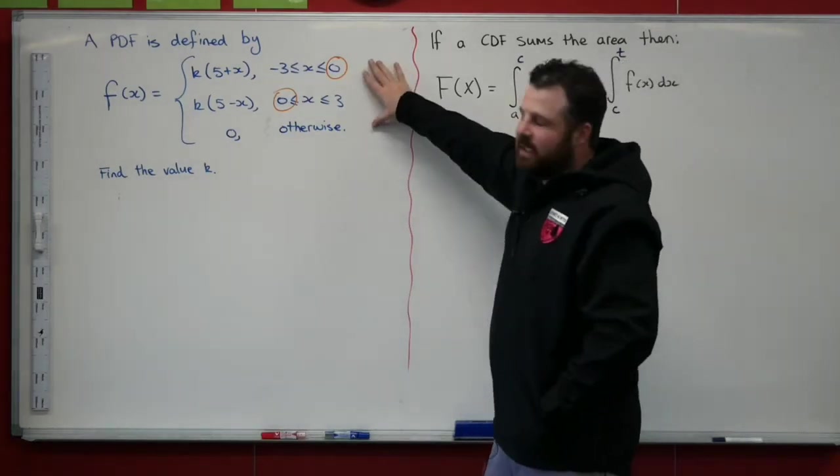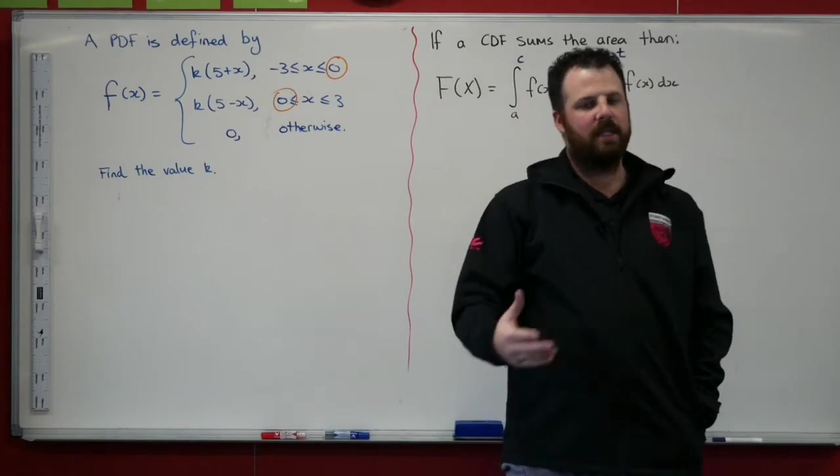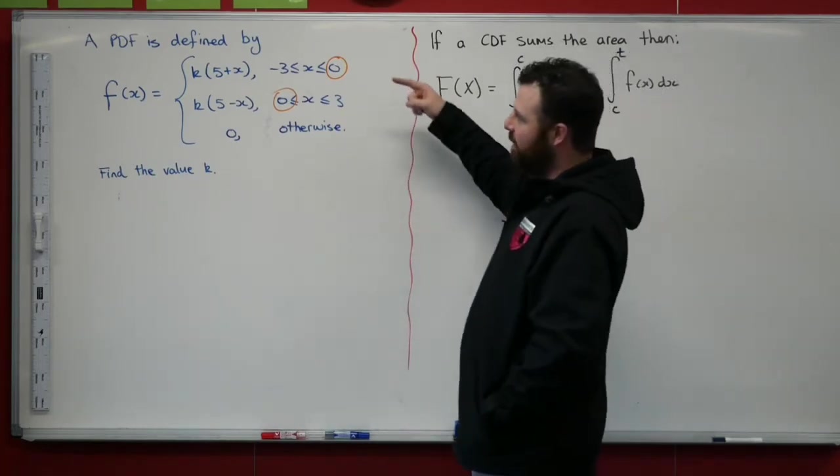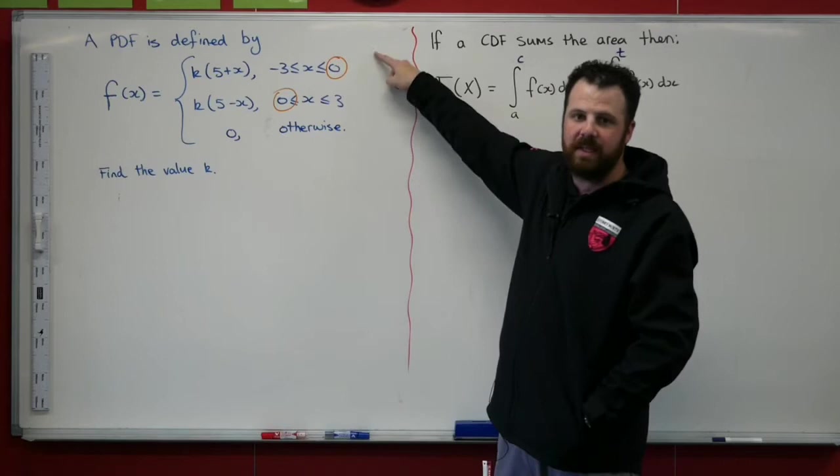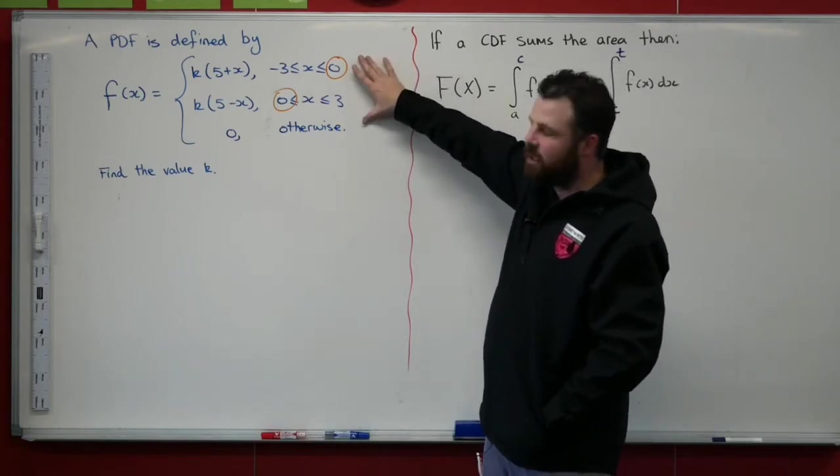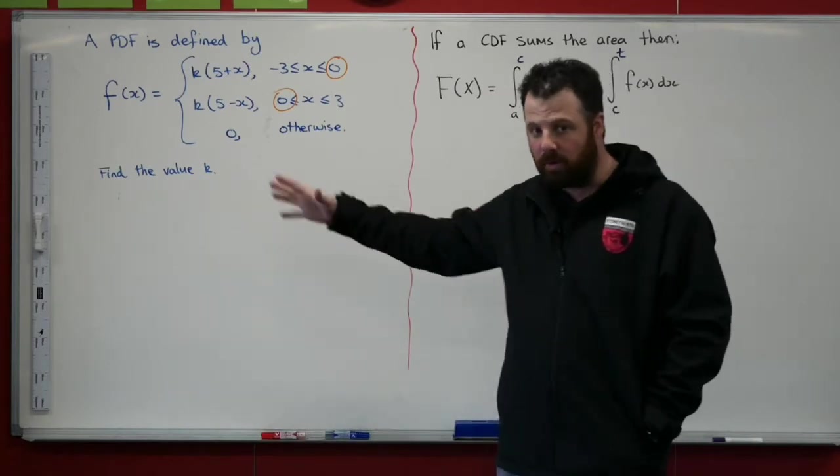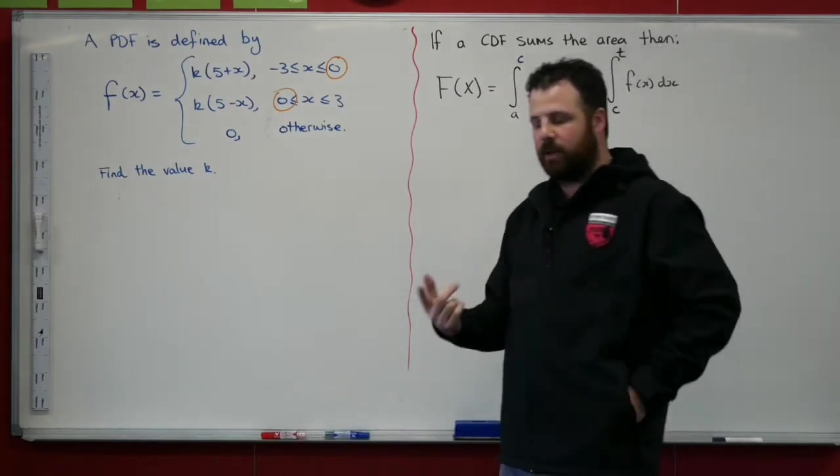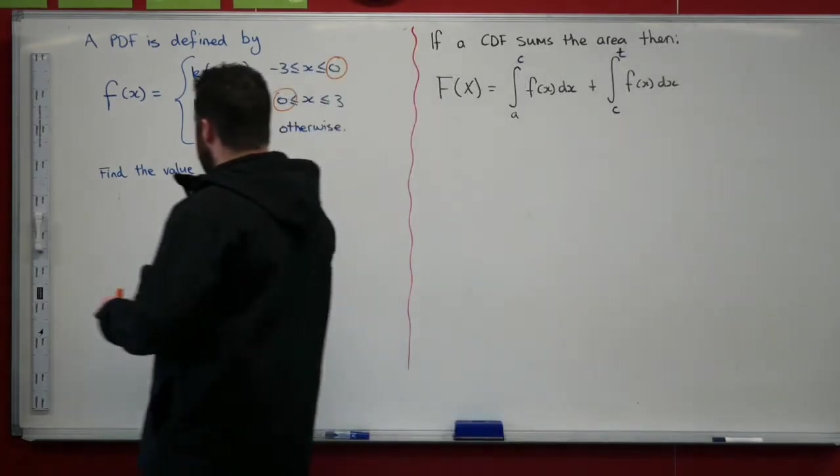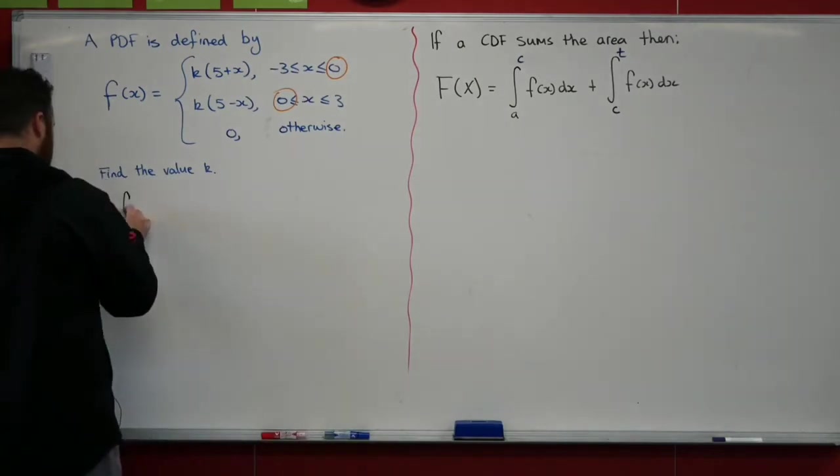How are we going to do that? Well, this is a PDF, a probability density function. Because it's a PDF, what we have is we know that when we sum up all these areas, when we integrate all this between minus 3 and 3, all of it, we know that our area is going to equal 1.